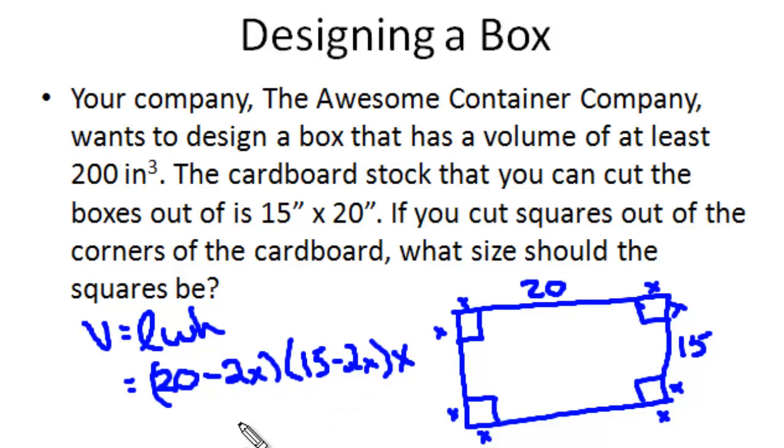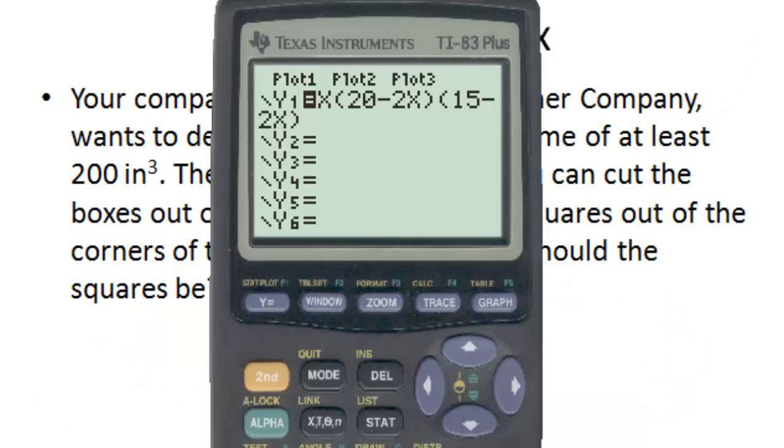Now in this case, we want it to be at least 200 inches cubed. So at least means that 200 is less than or equal to this amount. This is what we want to put into our calculator. Go ahead and get out your graphing calculators. We want to graph it, and then we need to decide what our window should look like.